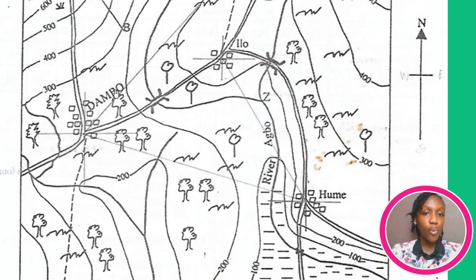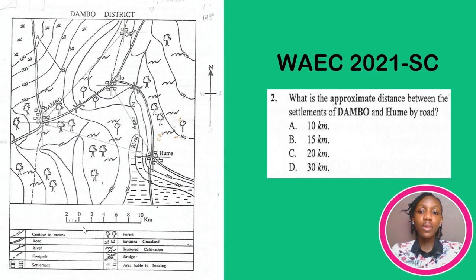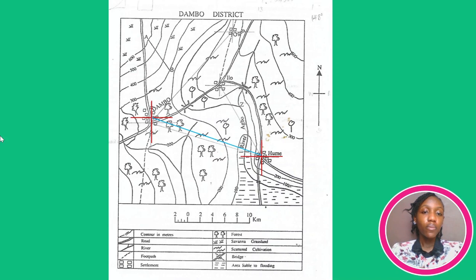This is Dambu, and then this is Hume — forgive my pronunciation. Now that we've identified the two settlements, the next thing to do is to connect them by drawing two cardinal points. As you can see, I've drawn my two cardinal points and I've drawn a straight line — this blue line — to connect them. All that's left to do is measure the distance, and by doing so we get 9.1 centimeters.